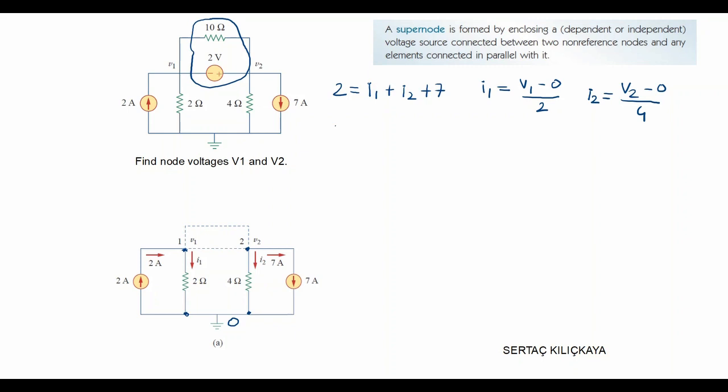And if we substitute those two currents I1 and I2 into this equation we can get the relation as 2 equals to V1 over 2 plus V2 over 4 plus 7. Or equivalently 8 equals to 2V1 plus V2 plus 28.